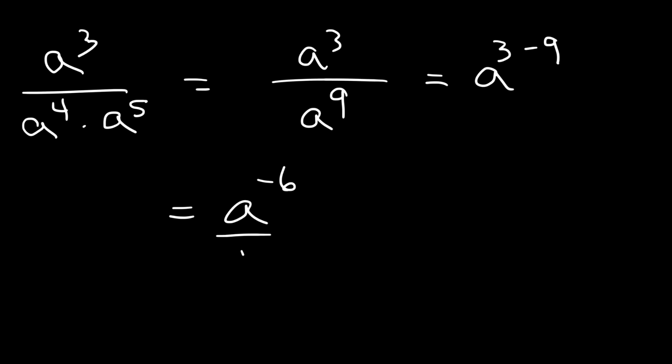Try a similar problem. a cubed divided by a to the 4th times a to the 5th. So first, let's multiply these two. 4 plus 5 is 9. And now let's divide. So this is going to be 3 minus 9, which is negative 6. And because we have a negative exponent, let's move the a variable from the top to the bottom. So the final answer is going to be 1 divided by a to the positive 6.